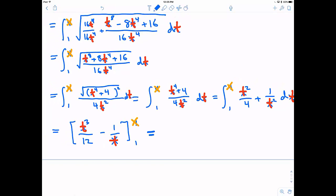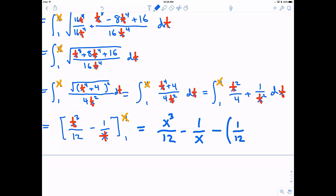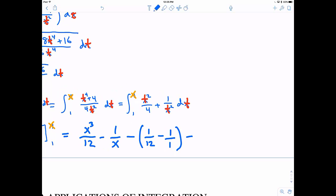Now when I plug in a limit of integration, if I plug in x everywhere I see a t, I'm going to have x cubed over 12 minus 1 over x. And if I plug in 1 everywhere I see a t, that will give me 1 twelfth minus 1 over 1, a.k.a. just 1. We can simplify this down a little bit more. This is going to be x cubed over 12 minus 1 over x. And then, 1 twelfth minus 1, so that's going to be negative 11 twelfths. But then I have a second negative sign, so that's going to be plus 11 twelfths.